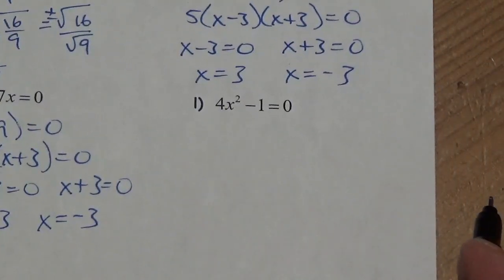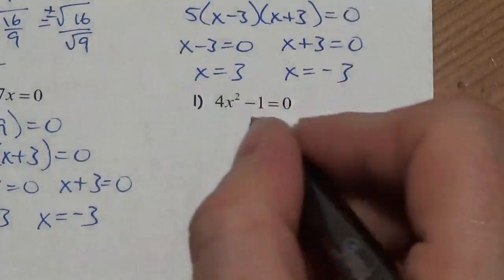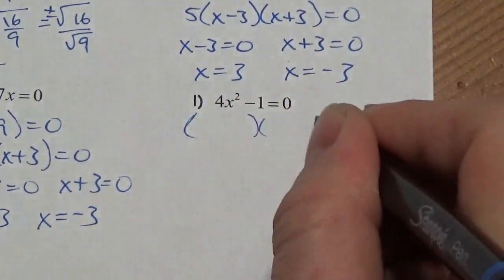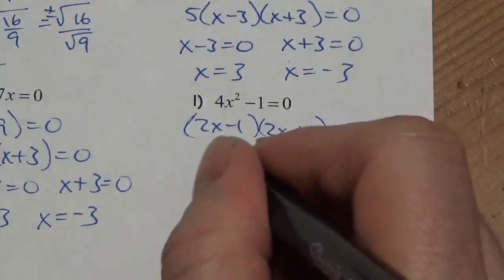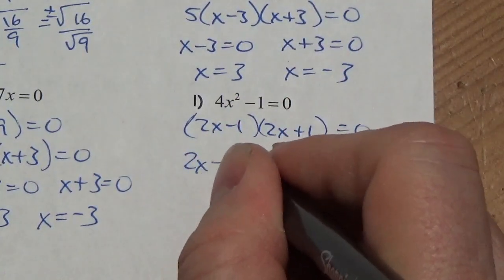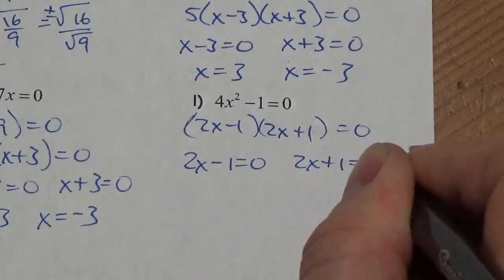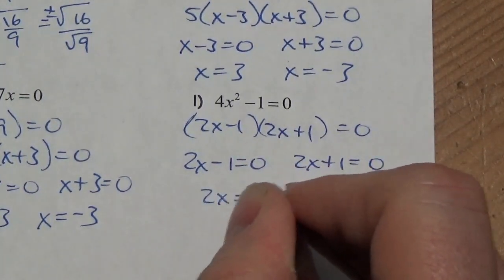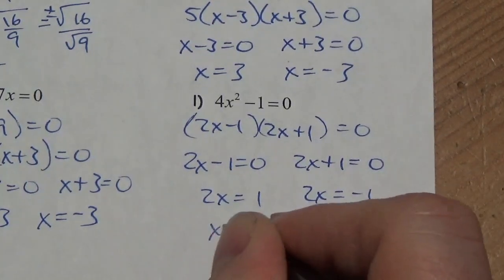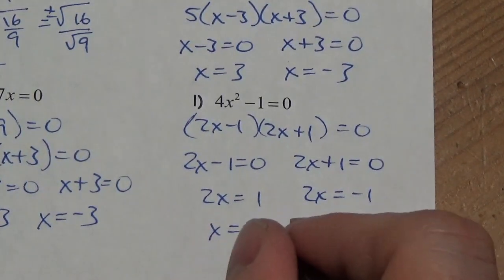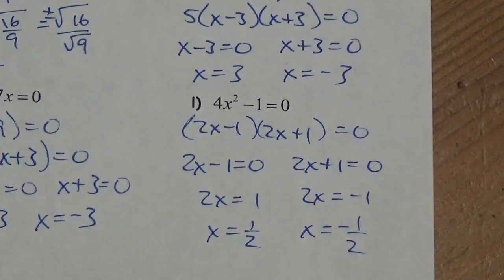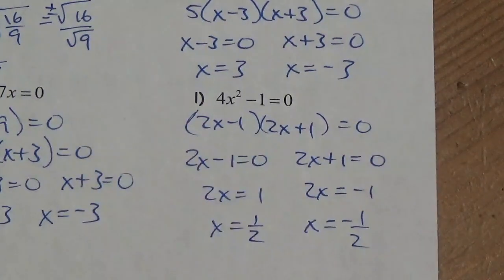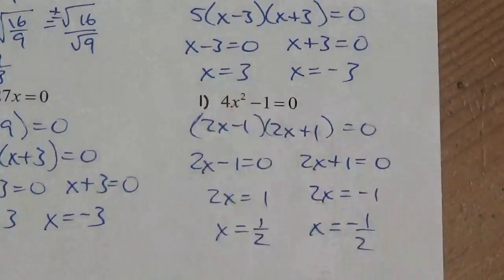This one is a difference of squares: 4x² - 1 = (2x - 1)(2x + 1) = 0. So either 2x - 1 = 0 or 2x + 1 = 0. Bringing constants over and dividing: x = 1/2 or x = -1/2. Both of those work. I hope this helps get you thinking about how to solve these kinds of problems.